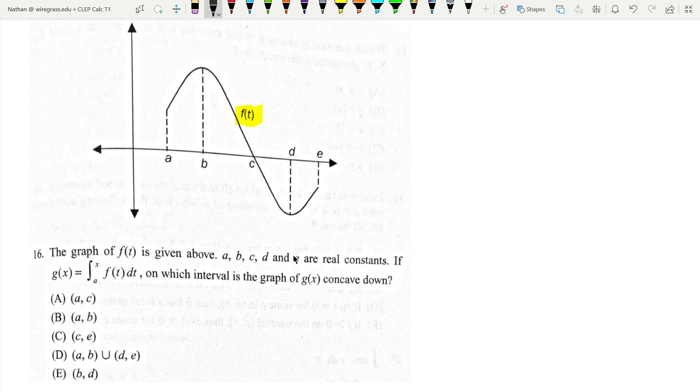A, B, C, D, and E are all real constants. If g of x equals the integral from A to x of f of t dt, when is g of x concave down?